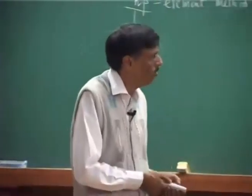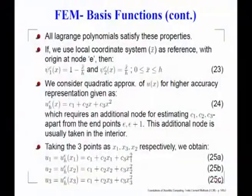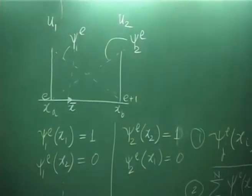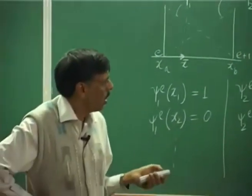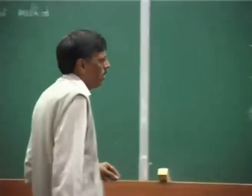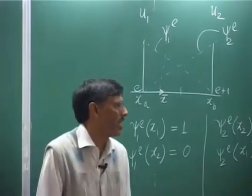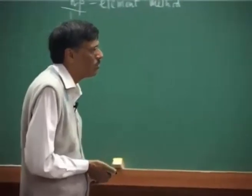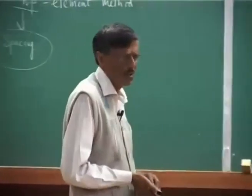For quadratic representation, we look at elemental functions requiring us to solve for three constants c1, c2, and c3. The element is still spanned by E and E plus 1, but we need to fix three unknown constants, so we introduce an additional node, ostensibly inside the domain. It could be anywhere, but here we will take the additional node to be at the middle of the element.